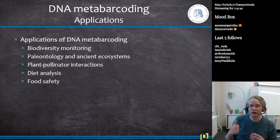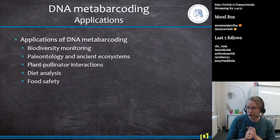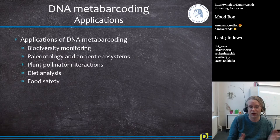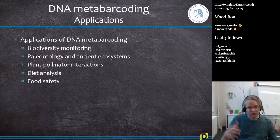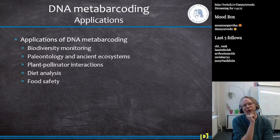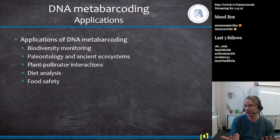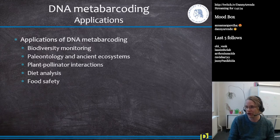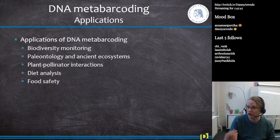Why do we do metabarcoding? We do it for biodiversity monitoring, but also in paleontology for studying ancient ecosystems. For example, if you have a mammoth that was frozen in ice, you might want to know what the mammoth ate and what the environment was like. You would take a sample from the mammoth's stomach and do DNA metabarcoding to see which things are in there. You can also do it with ancient poop from animals. In paleontology, this is used a lot to get an idea of the environment that animals lived in.